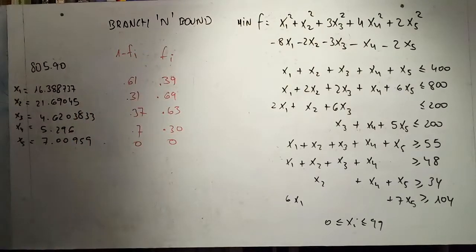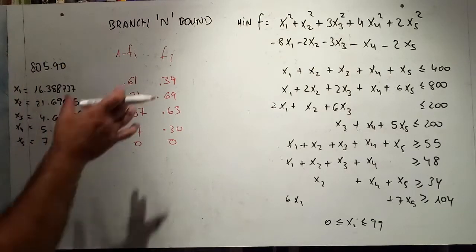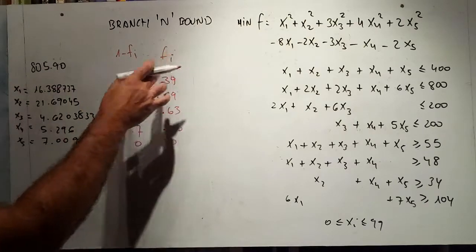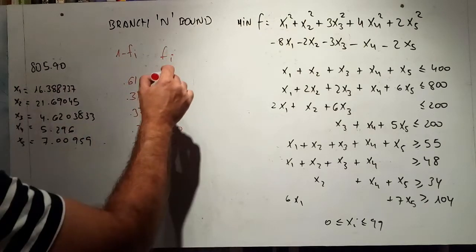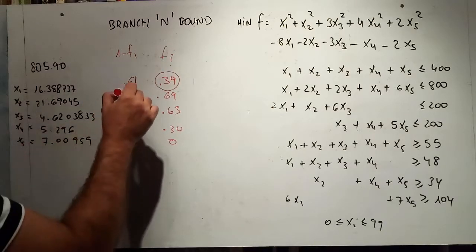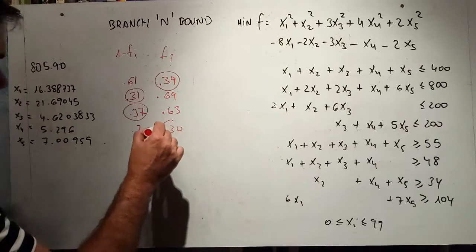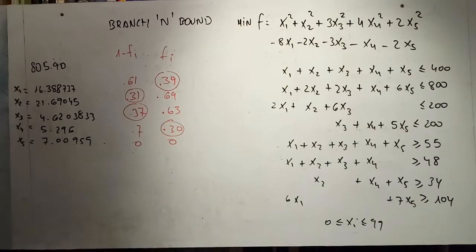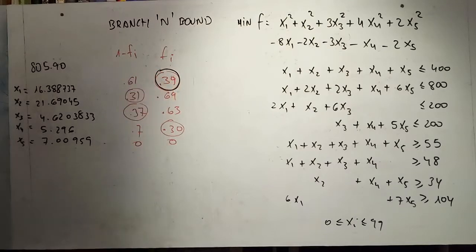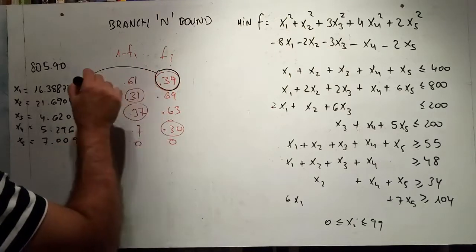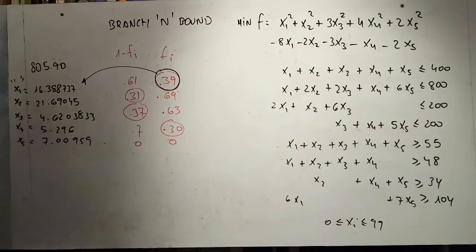There are different approaches; I'm using this one rather than demerit functions or penalties. For every row we pick the minimum of the two columns and circle it: the minimum for row one is 0.39, for row two 0.31, for row three 0.37, for row four 0.30, and row five is 0. Then among the circled values we select the maximum, which corresponds to x1. So this tells us we are going to do the ramification over variable x1.